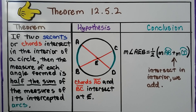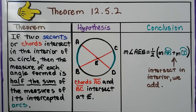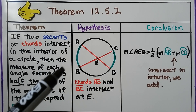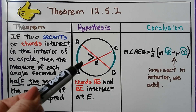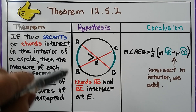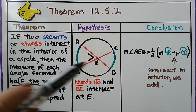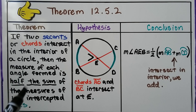Now, theorem 12.5.2: if two secants, or two chords, intersect in the interior of a circle, then the measure of each angle formed is half the sum of the measures of its intercepted arcs. Here, chord AD and chord BC intersect at E. The measure of angle AEB equals half times the measure of arc AB plus the measure of arc CD. If they intersect in the interior, we add.